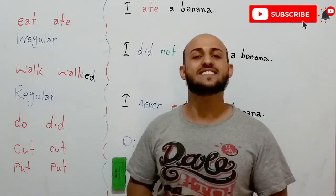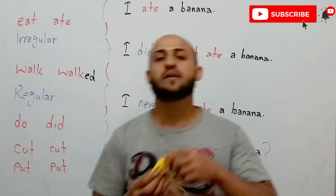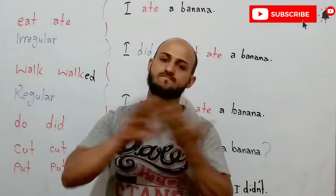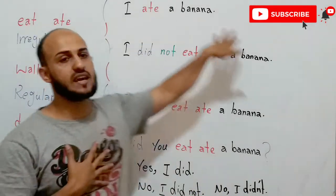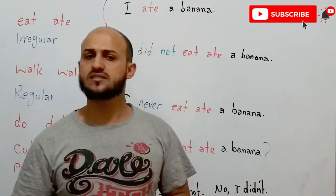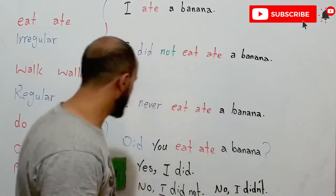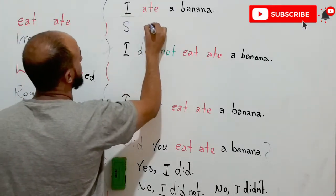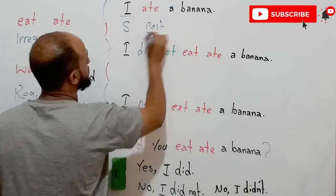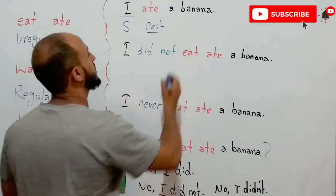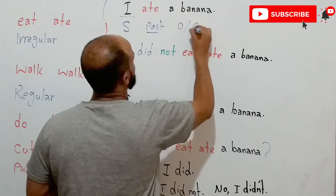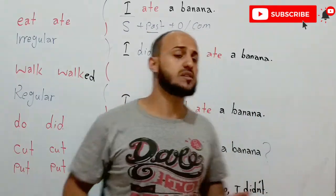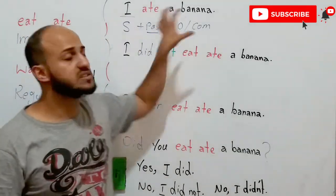So what did I do at the beginning of the video? I ate a banana — it's finished, done. That's the past simple. The rule here is: Subject + past verb + object or complement. That's it — it's simple.